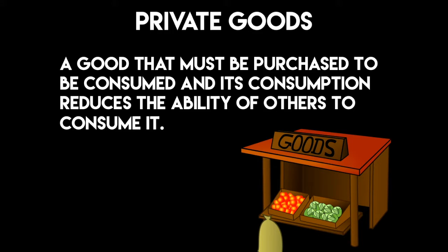A private good is something that needs to be purchased to be consumed, and after it's purchased, it reduces the ability of others to consume it. An example would be getting a haircut — I have to pay for it, and if I get a haircut from one specific barber, it reduces the ability of somebody else to get a haircut from that barber. The same works with fruits and vegetables: if one person buys them, it reduces the amount available to other people.